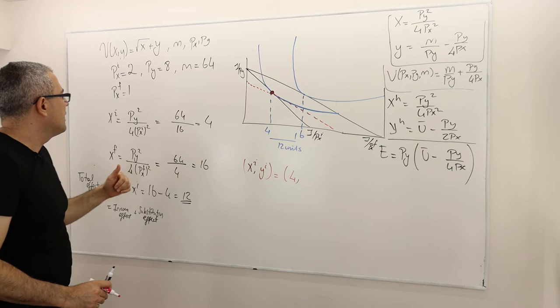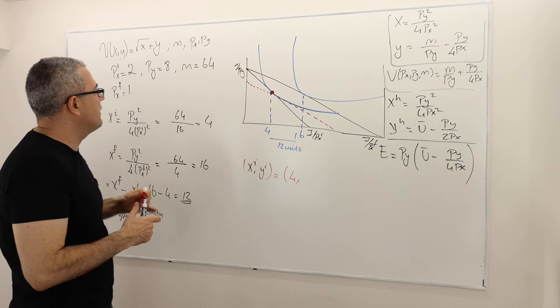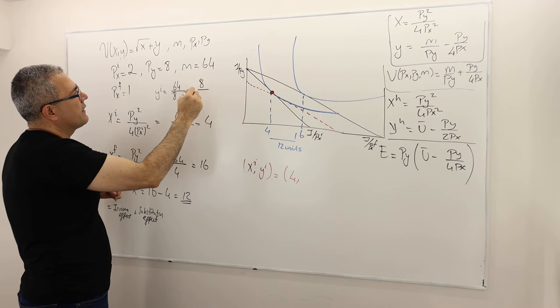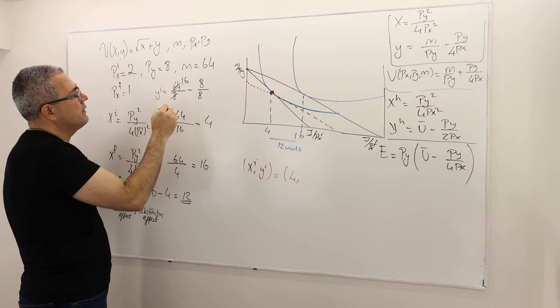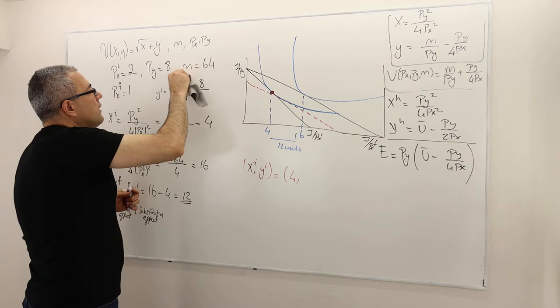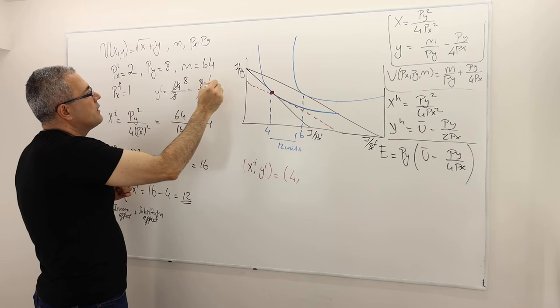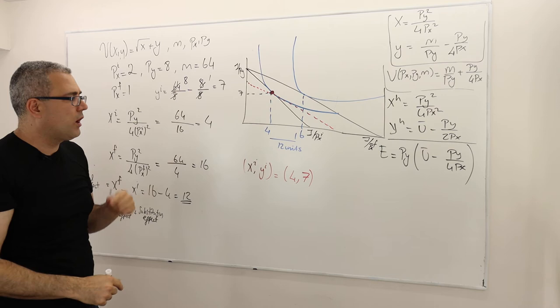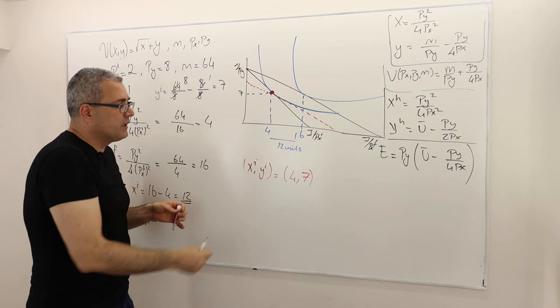I need to find Y_initial as well. Looking at the Marshallian demand, Y_initial equals M divided by PY minus PY divided by 4·PX, which is 64/8 minus 8/(4×2) = 8 minus 1 = 7. So my initial good X is 4 and my initial good Y consumption is 7. This is the optimal consumption when PX=2 and PY=8.